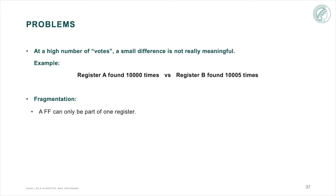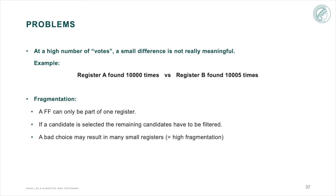In general, a flip-flop can only be part of one register. Now if a candidate is selected, the remaining candidates have to be filtered. Thus a bad choice may result in many small registers which is equal to a high fragmentation. Furthermore, the normal majority voting cannot make use of the a priori knowledge.